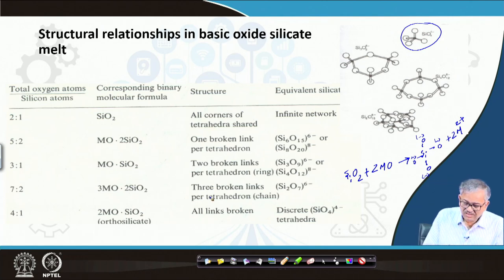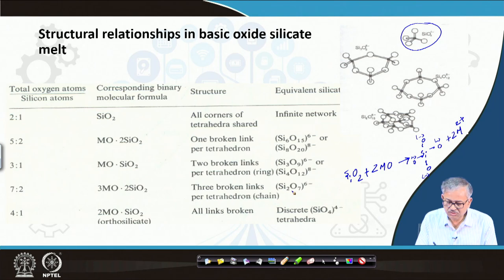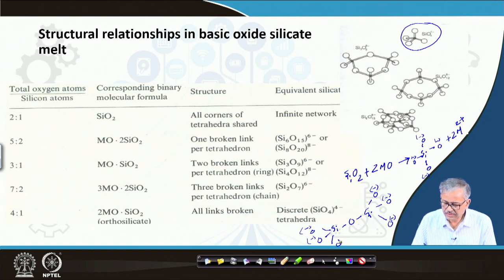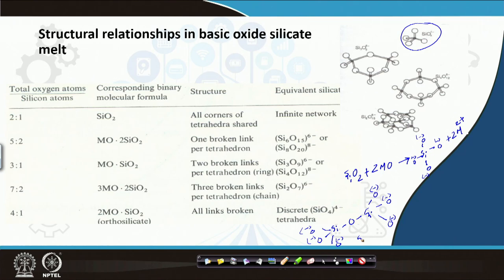When three links are broken, the structure is Si2O7 6-: two silicon atoms sharing one bridging oxygen, with the remaining three oxygens on each silicon being terminal. You can count: 3 + 3 = 6 terminal oxygens plus 1 bridging oxygen = 7 total oxygens, 2 silicons, charge 6-. This forms a chain structure, and Si2O7 6- or Si2O6 chain can be found. So as you increase the basic oxide, the oxygen-to-silicon ratio increases, the number of broken bonds increases.